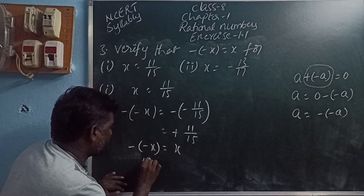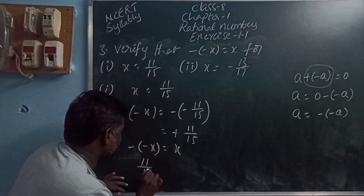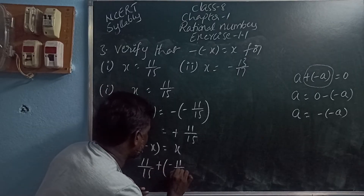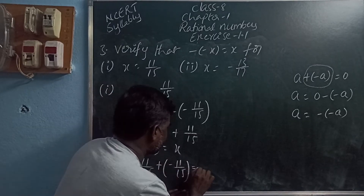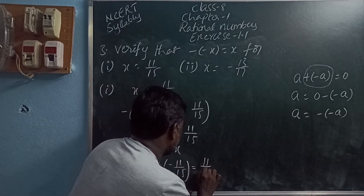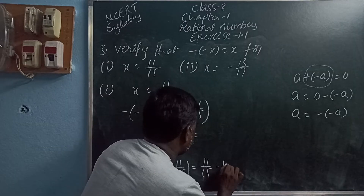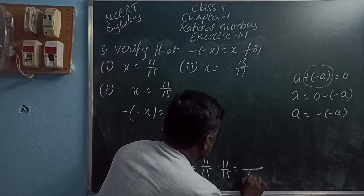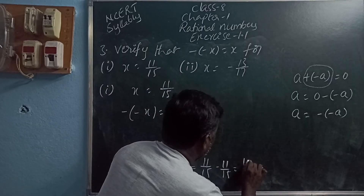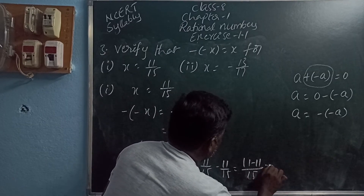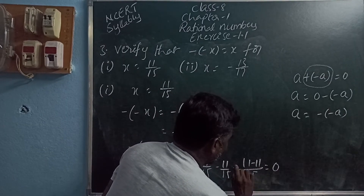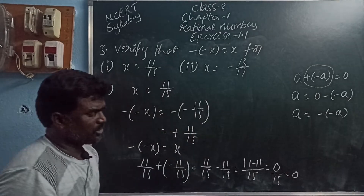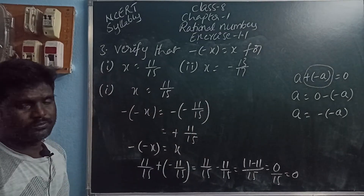Here 11 by 5 is added to its inverse minus 11 by 5. Plus into minus is minus. So minus 11 by 5 minus 11 by 5. Write the common denominator and add the numerators. That equals zero. Zero by anything is zero.